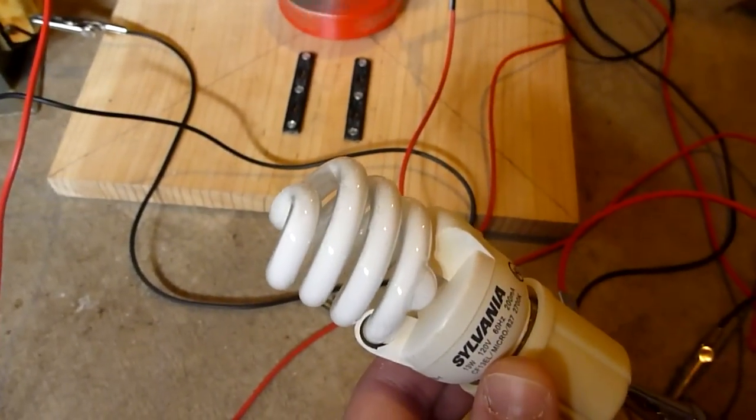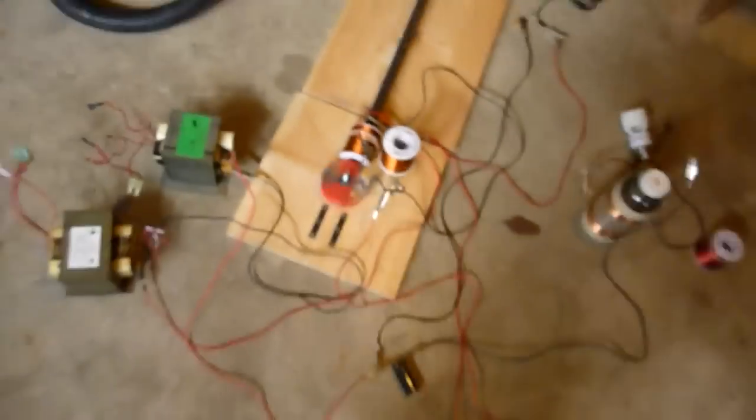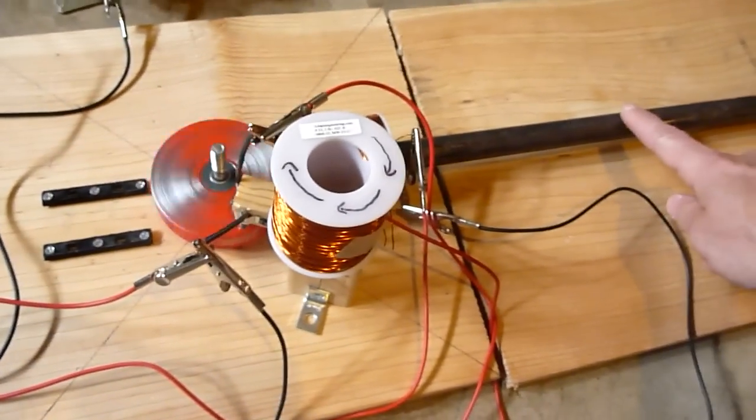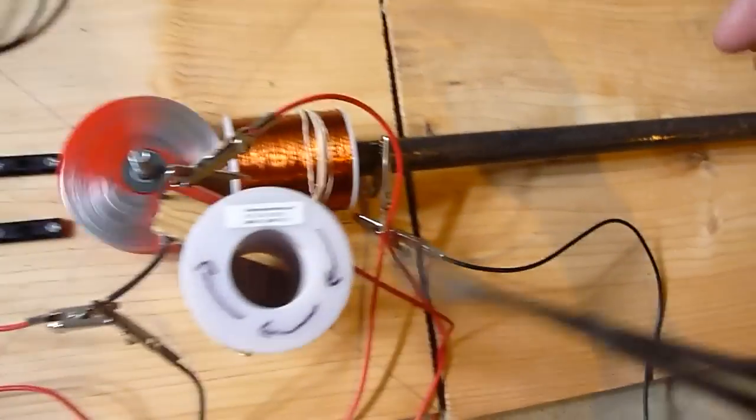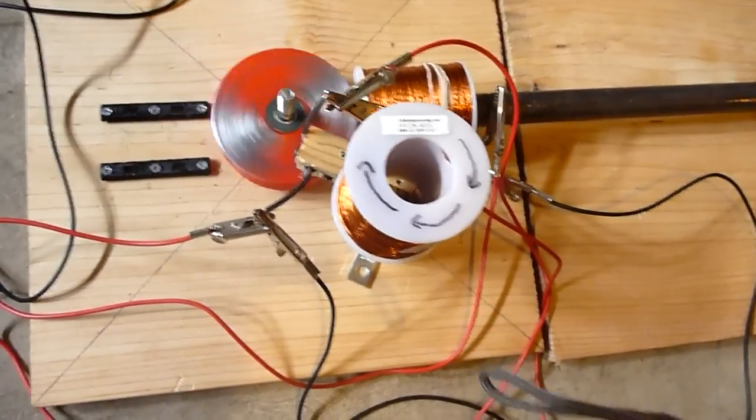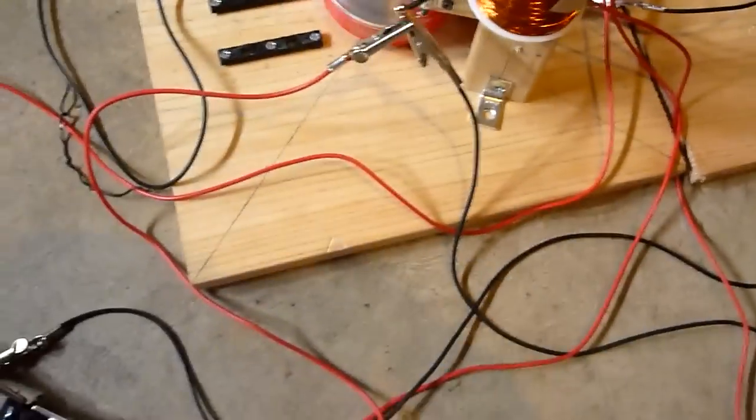As you can see it's going really fast. I also added this iron bar in here. This iron bar goes into the air coil and it just strengthens the induced magnetism in the air coil. It seems to be doing really well.